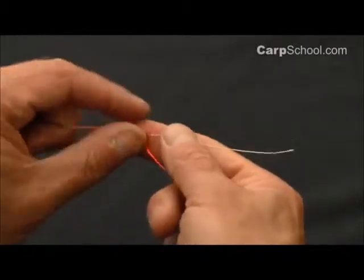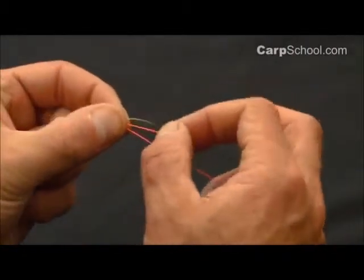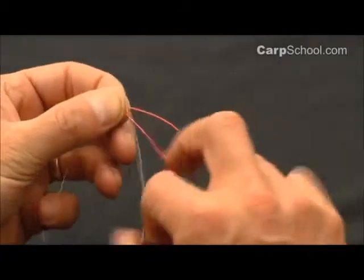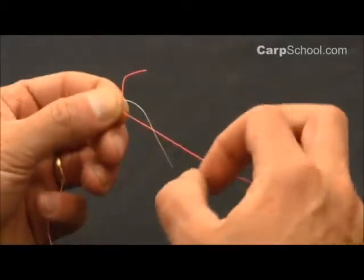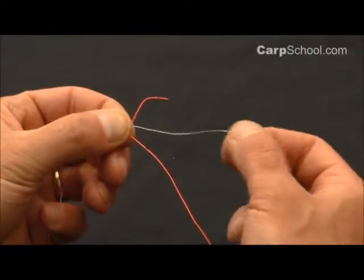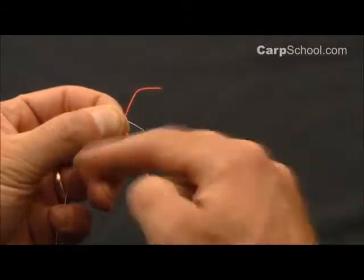Okay, now it's important that that stays like so. And we're now going to wrap the white colored braid around the orange in the same way.